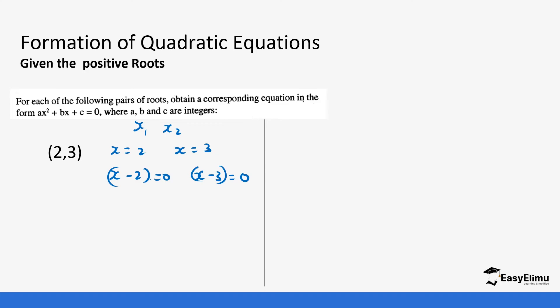You remember when you were factorizing, these are the values we got, and then from there we open the bracket. So this is (x minus 2) multiplied by (x minus 3) equals 0.